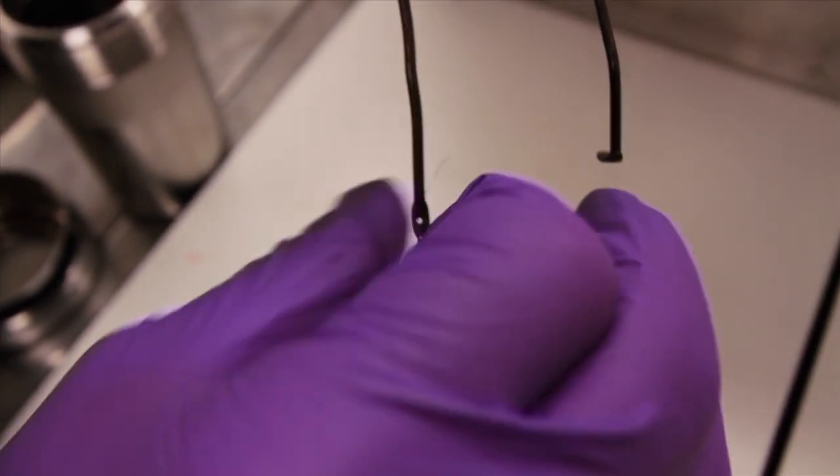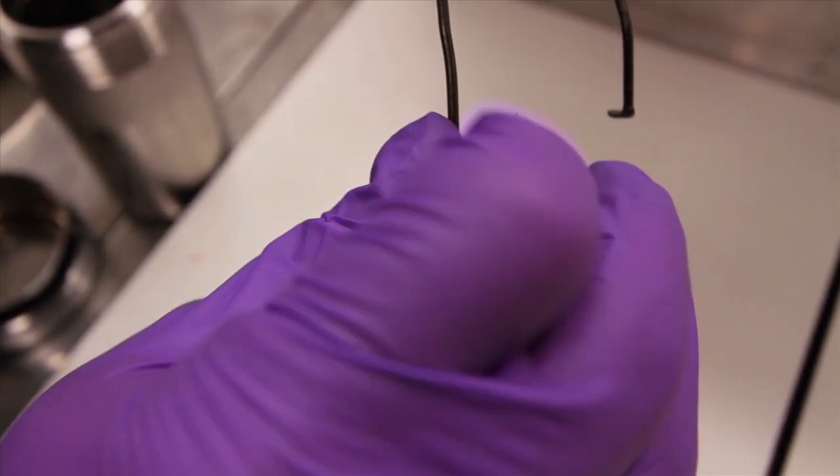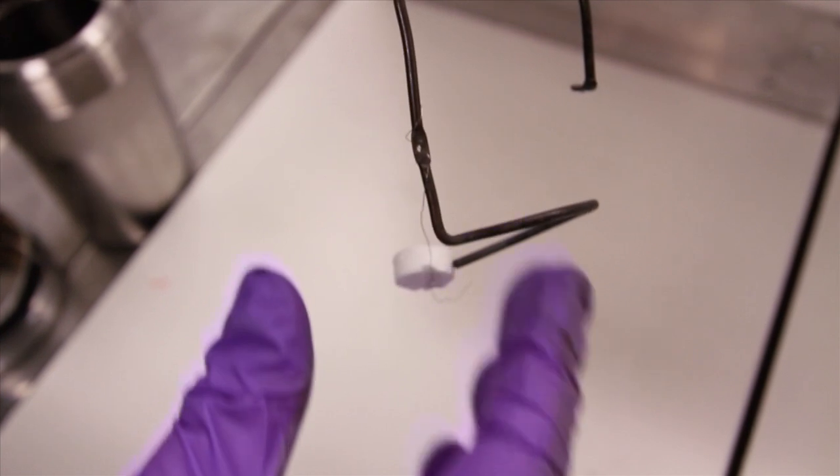The fused sample and wire are loaded into the calorimeter by threading the wires through the small holes on the lead inside the bomb.